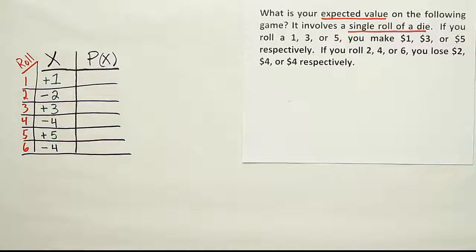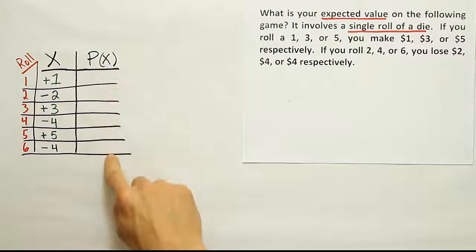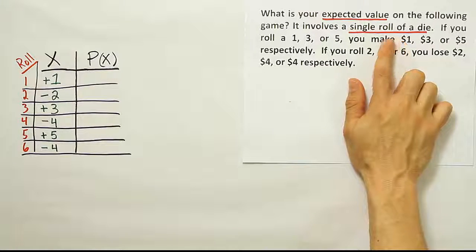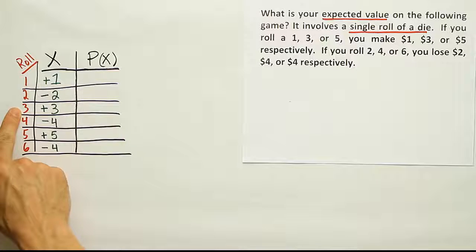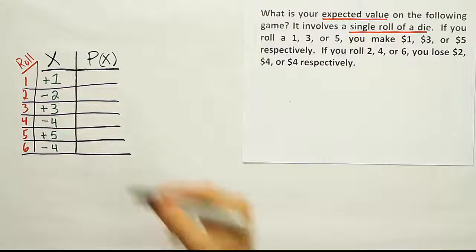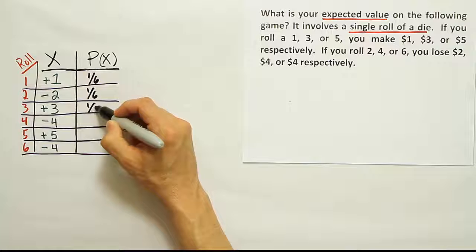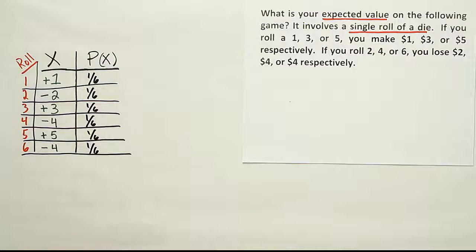Now I need to multiply these numbers by their probabilities. This problem doesn't mention probabilities, but a roll of a die has a simple uniform probability distribution. The chance of rolling any given number is 1/6, since it's one option out of six. So every outcome — 1 through 6 — has a probability of 1/6.